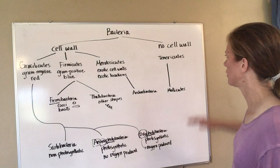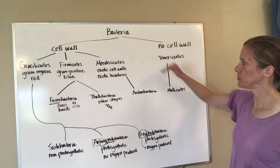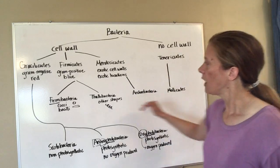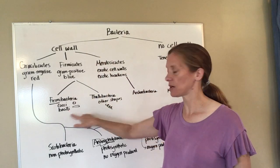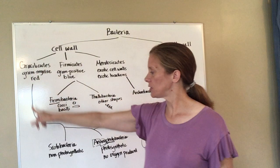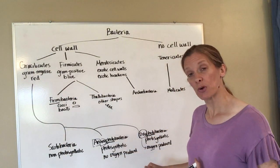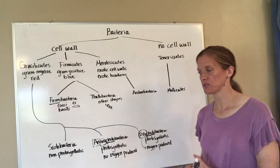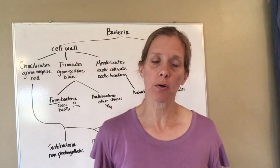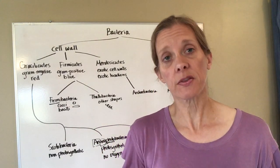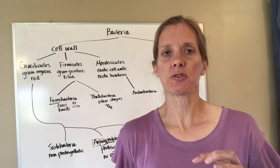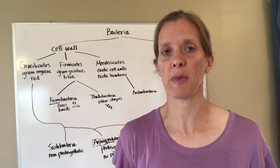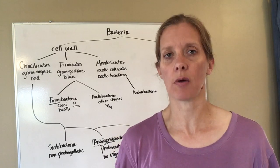To sum everything up: Tenericutes with no cell wall and Mendocicutes with the exotic cell wall each have only one class, so those aren't too tough to keep straight. Firmicutes is broken down into two classes based on the shape of the bacteria. Gracilicutes is based on whether the bacteria are photosynthetic or not, and then whether the photosynthetic bacteria produce oxygen or not. On your test, I'll give you the names of the phyla and the classes, and all you'll have to do is match the name with the characteristic so you can place a given bacteria into the correct phylum and class.